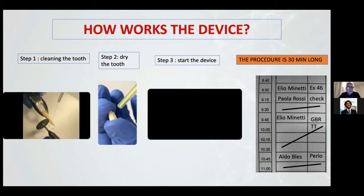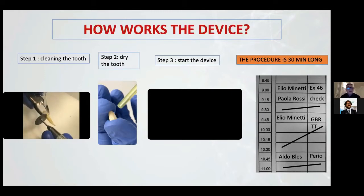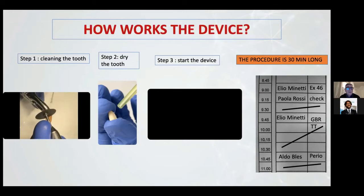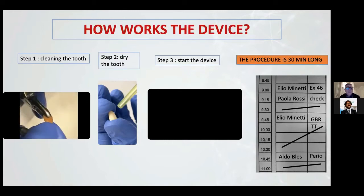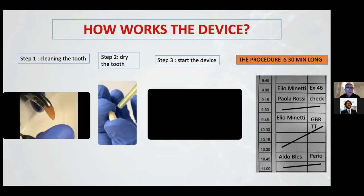Now we cut using a disc, because the device contains a low speed grinder that has a little space inside. So we need to cut the roots. Another reason to cut the roots is to be able to clean the endodontic material.